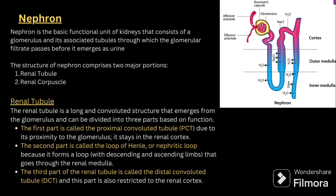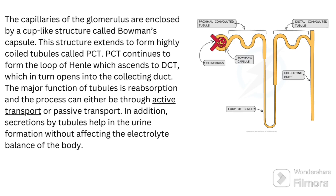The nephron is the functional unit of the kidney. It consists of the glomerulus and associated tubules through which the glomerular filtrate passes before emerging as urine. The structure of the nephron comprises the renal tubule and renal corpuscle. The renal tubule is a long and convoluted structure that emerges from the glomerulus and is divided into three parts. The first part is the proximal convoluted tubule, located in the renal cortex. The second part is the loop of Henle, which forms a loop with descending and ascending limbs through the renal medulla.